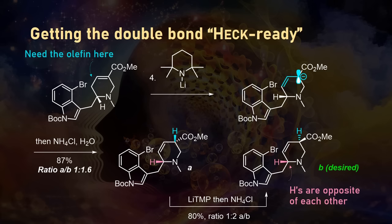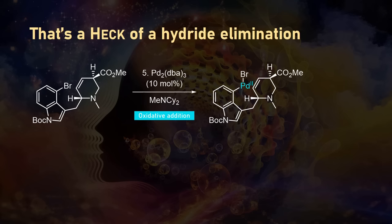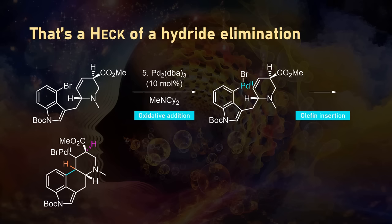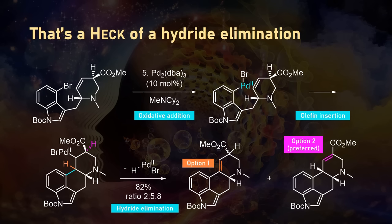The Heck reaction proceeded via a mechanism some of you might know. Oxidative addition of palladium(0) allowed for olefin insertion and creation of the C-C bond shown here in blue. Given there are two beta hydrogens available, there are two pathways towards elimination — the orange hydride elimination and the pink one, which is preferred in a rough 1-to-3 ratio. Note that the stereochemistry of the ester was partially lost in the orange product, and as this reaction was performed at 100 degrees with mild base, some isomerization took place.